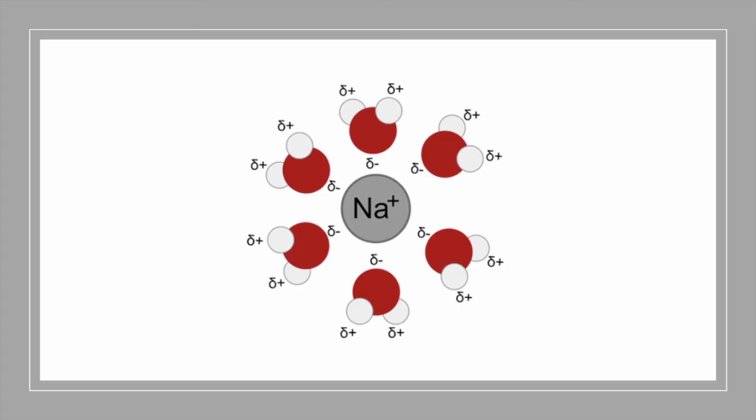When you're making particle diagrams, also don't forget the charges. Ions should have charges on them. Dipoles should have partial positive and partial negative charges on them, especially if you're trying to show intermolecular forces. They must also be properly aligned to maximize attraction and minimize repulsion.